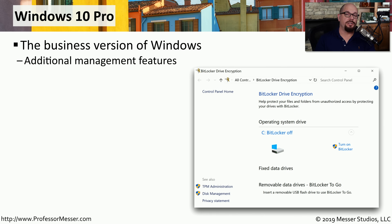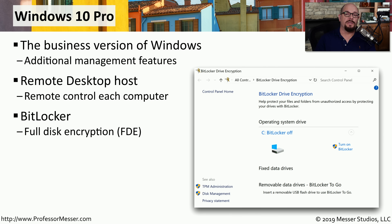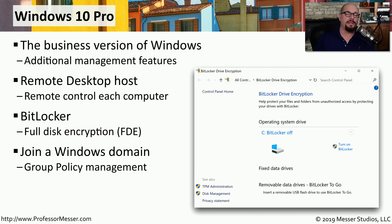If you're using Windows in a business, you're probably using Windows 10 Pro — the edition designed for the professional. This includes features such as Remote Desktop Host, where every Windows 10 device can be a host for the remote desktop service, allowing your help desk to connect to your desktop across the network. Windows 10 Pro also includes BitLocker for full disk encryption, and it allows the operating system to connect to a Windows Active Directory infrastructure for centralized management using group policies.